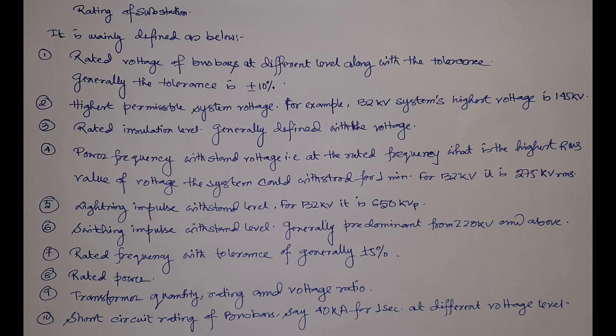Then there comes the short circuit rating of the bus bar along with the peak short circuit rating. The short circuit rating has two parts: the thermal withstand capacity and the peak withstand capacity. Thermal withstand capacity is typically 40 kA or 50 kA for one second. The peak short circuit criterion is defined based on that — for LT systems it is 2.05 times the rated short circuit current and for HT it is 2.1 times. So for a 50 kA LT system, the peak short circuit withstand current will be 105 kA peak.